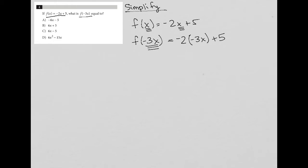It's just a replacement or substitution. So now when I simplify this, negative 2 times negative 3x is positive - I didn't need to write that. I was thinking it, but didn't need to write the positive sign. Negative 2x times negative 3x is 6x, and then I have plus 5. And that is my answer. f of negative 3x equals that. So that means my answer is choice B.